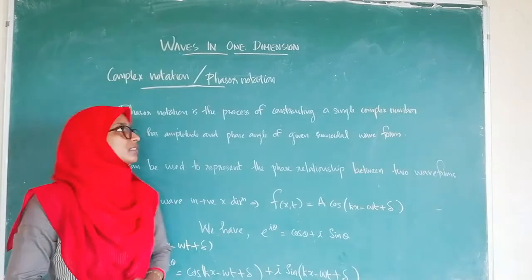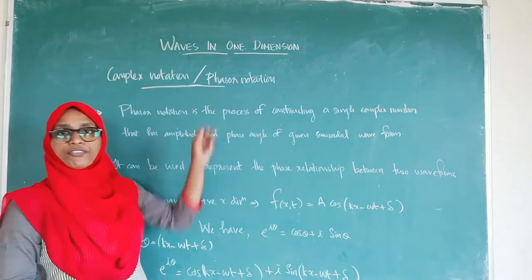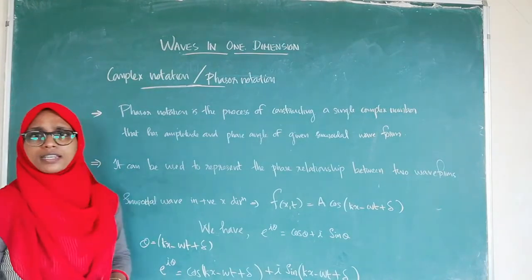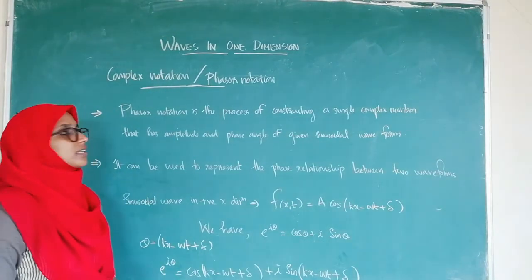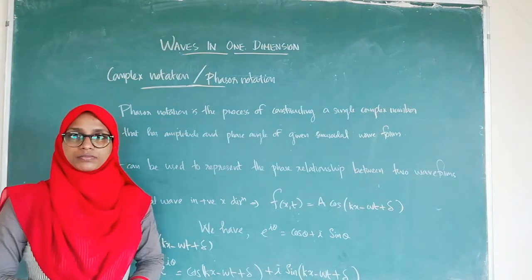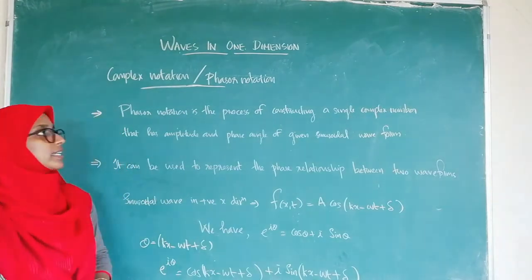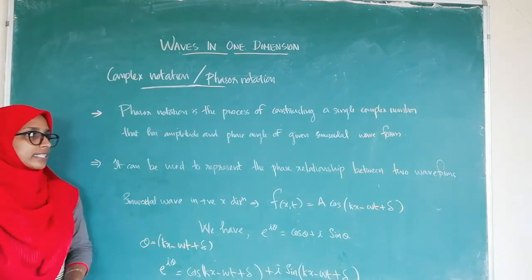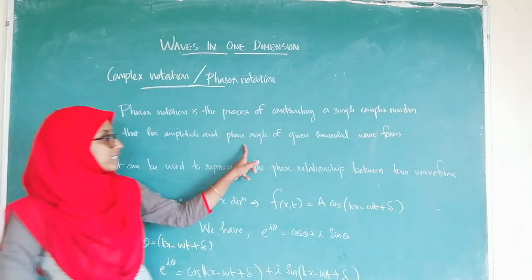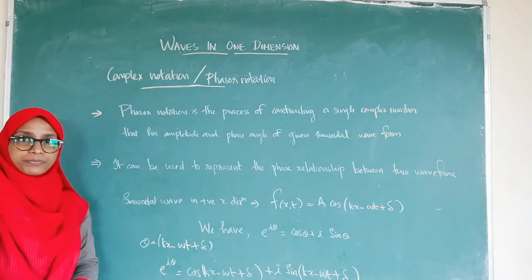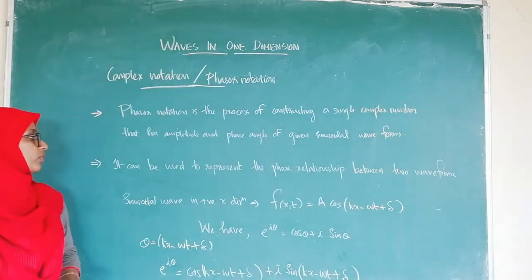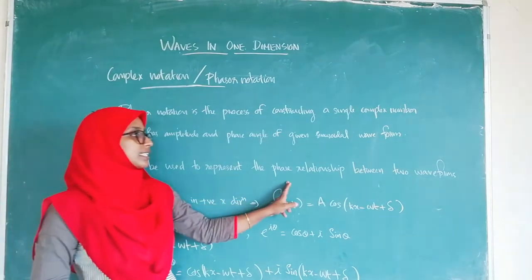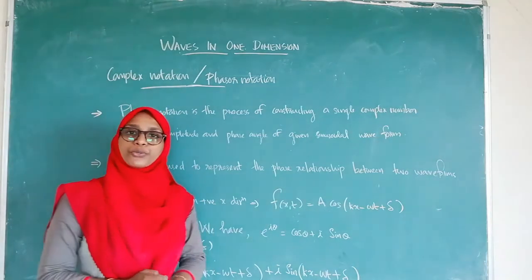The next topic is the complex notation, or phasor notation. The phasor notation is simply a complex number — it is the process of constructing a single complex number that has the amplitude and phase angle of a given sinusoidal wave. This phasor notation can also be used to represent the phase relationship between any two waveforms.